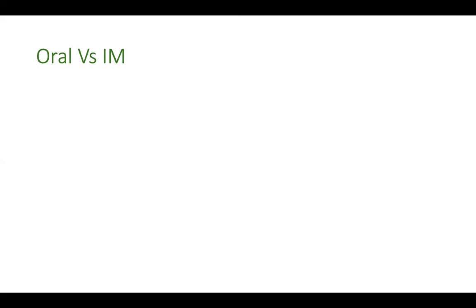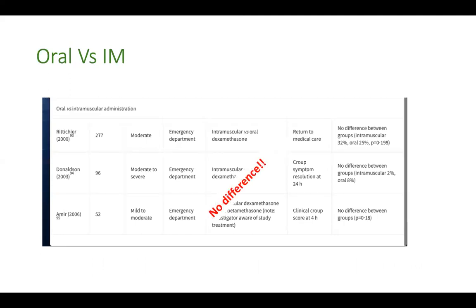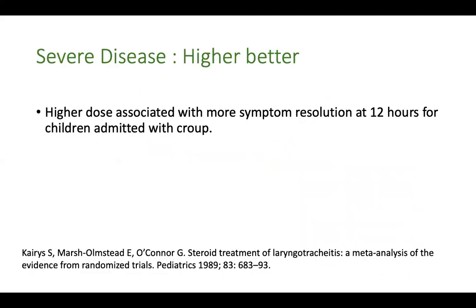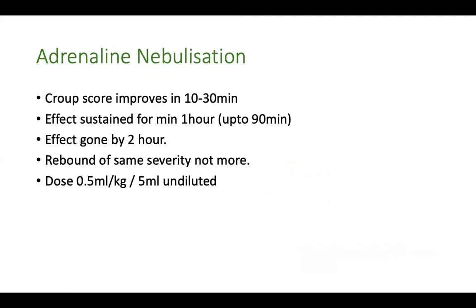Regarding route — oral, intramuscular, or intravenous — studies show no difference in efficacy or onset of action between oral and intramuscular. If the baby can take orally, oral is preferable. For dosing, the classic dose is 0.6 mg/kg as a single dose, but some guidelines recommend 0.15 mg/kg. Studies show no real difference between the two doses, however a meta-analysis showed higher doses are associated with more symptom resolution at 12 hours for admitted children. So for severe disease, 0.6 mg/kg is preferable.